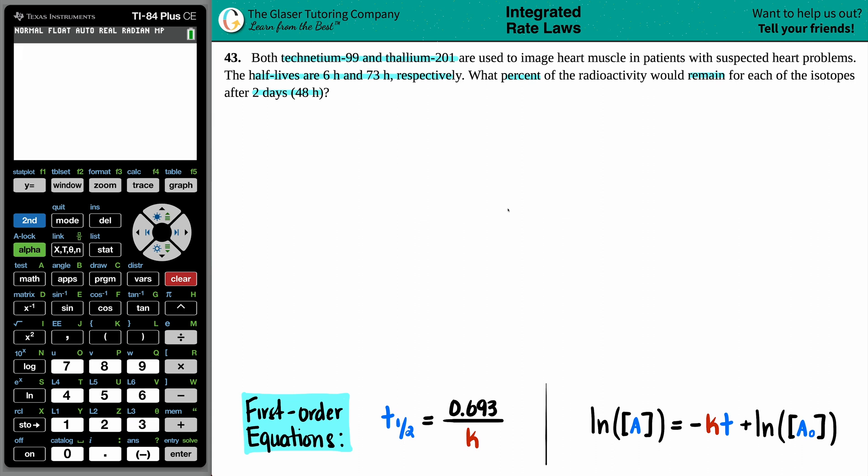Okay, so we have to do an equation for both technetium and thallium. So let's write them down. We'll do on the left technetium, technetium-99, and thallium. So I'm just going to put a line right here. Beautiful.